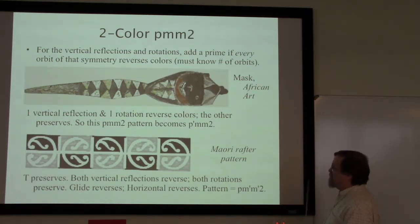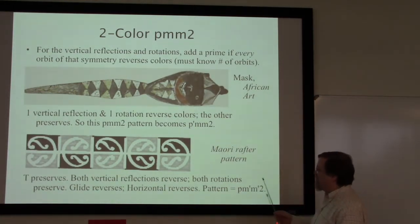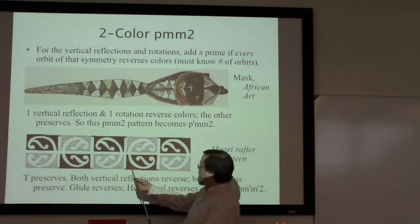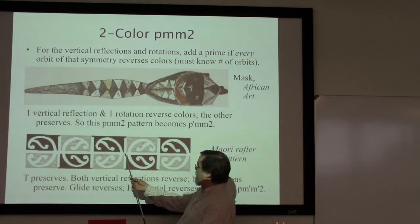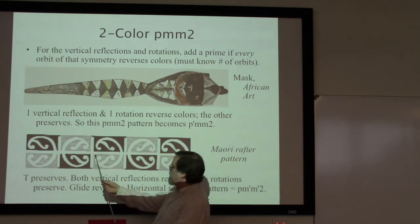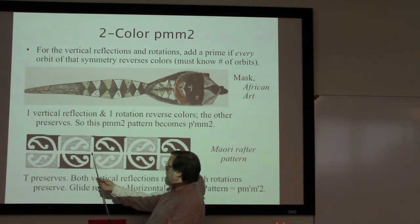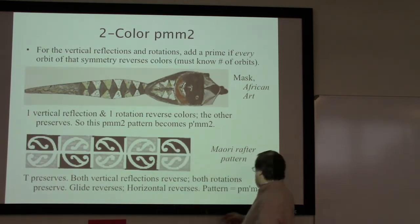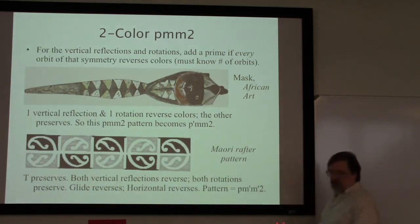Walking it all the way through: the translation has to go two steps — one step puts the base of the plant in the wrong spot — so the translation goes all the way over and preserves colors, no color change. There are two different vertical reflections: one at the base of the plants where the roots go into the ground — that reverses colors; one by the leaves at the tops of the plants — that also reverses. Both vertical reflections reverse, so I get the m prime. For horizontal and glide reflection, I put an m prime there. The rotation point by the roots preserves, and the rotation by the leaves also preserves — so we get a two that's not two prime.